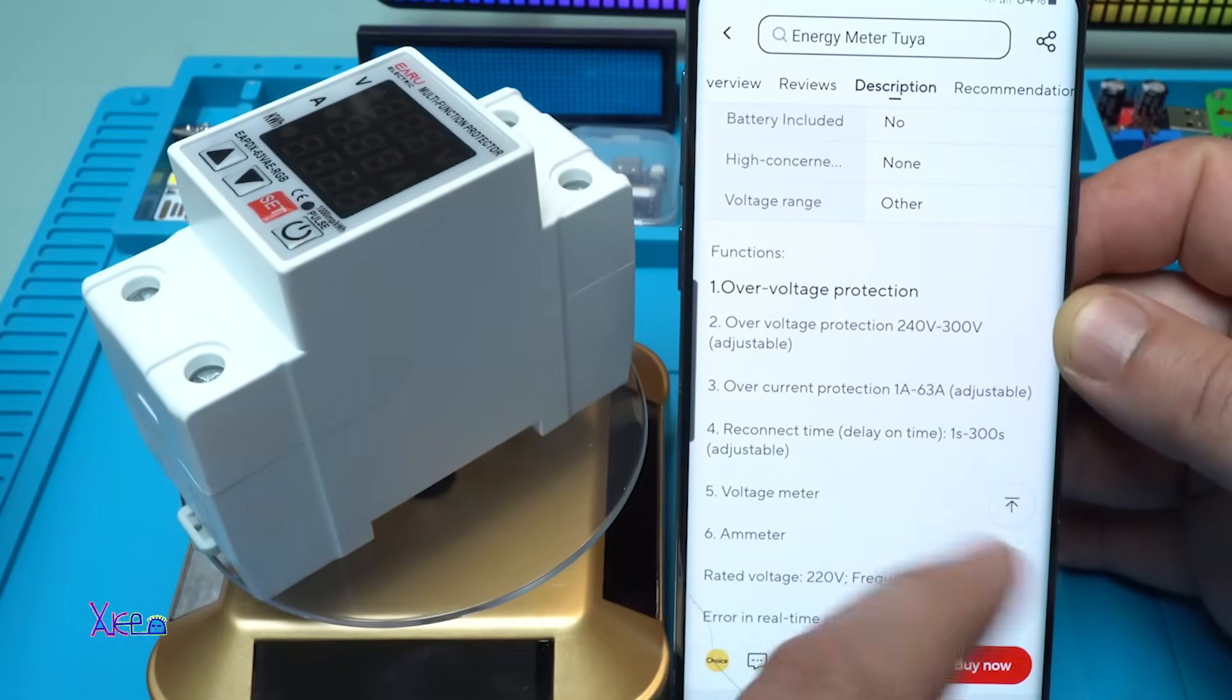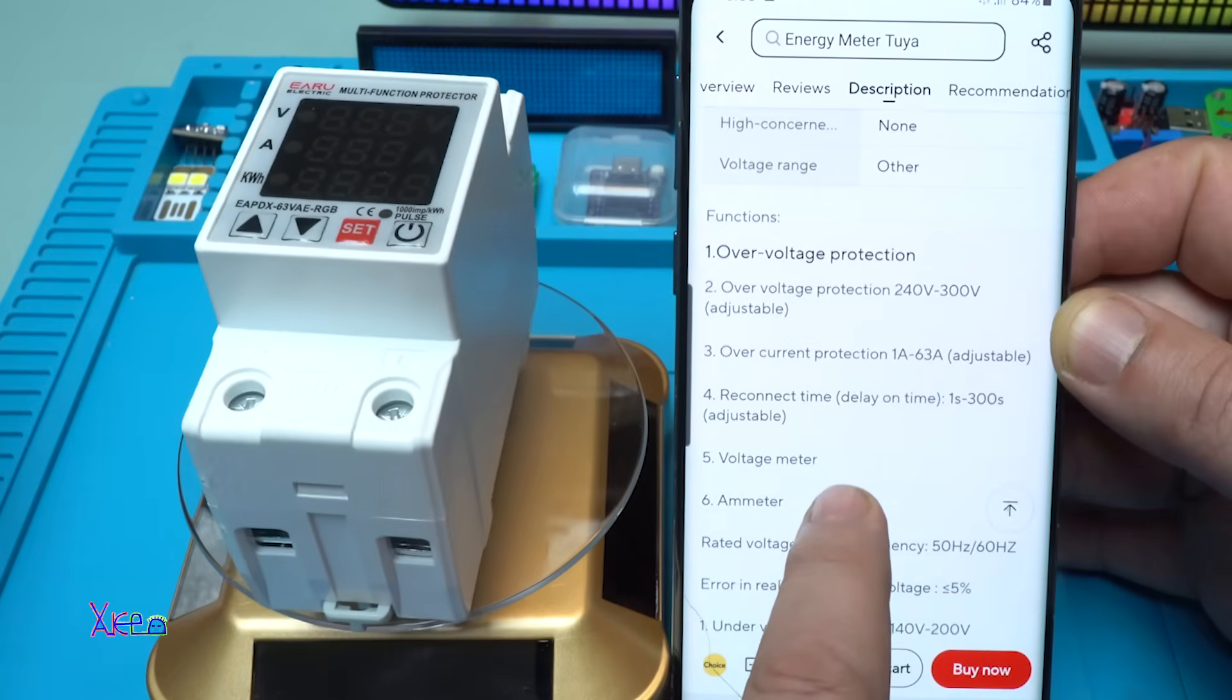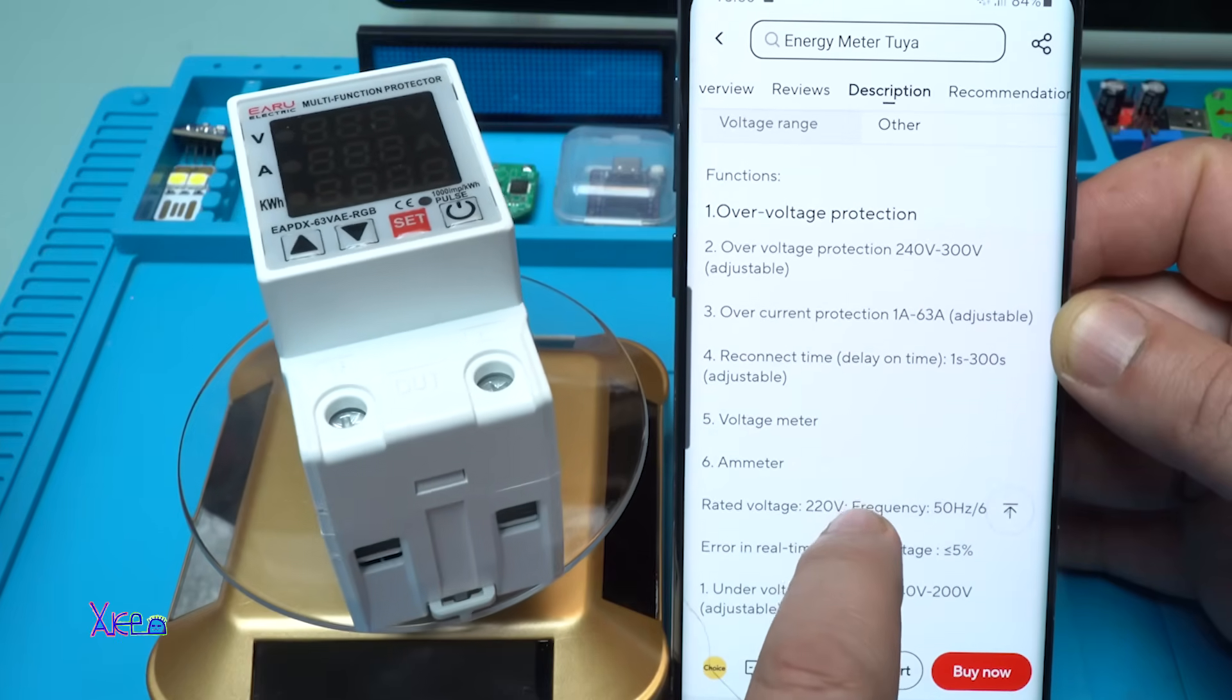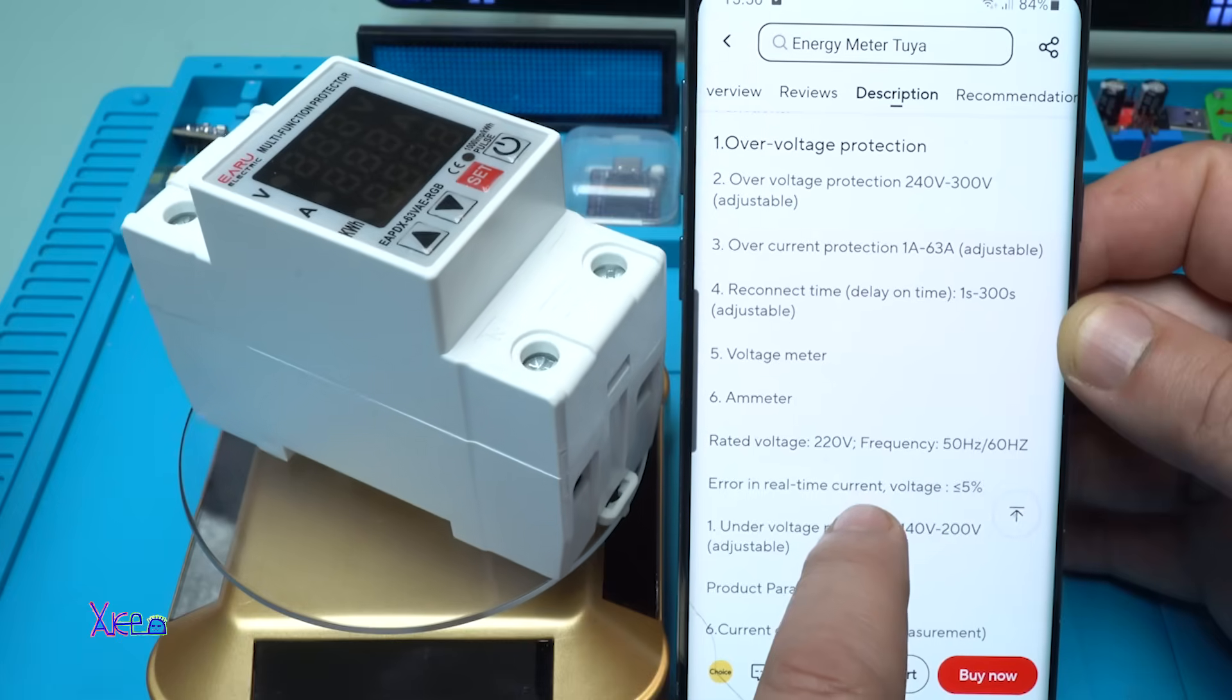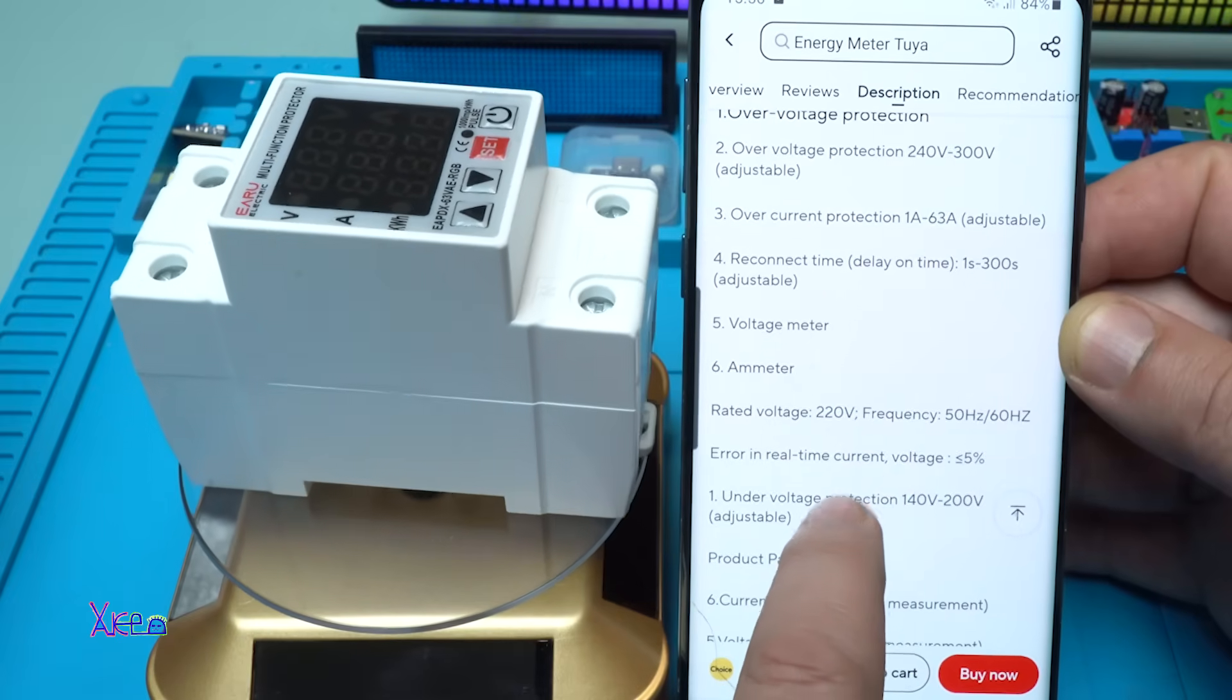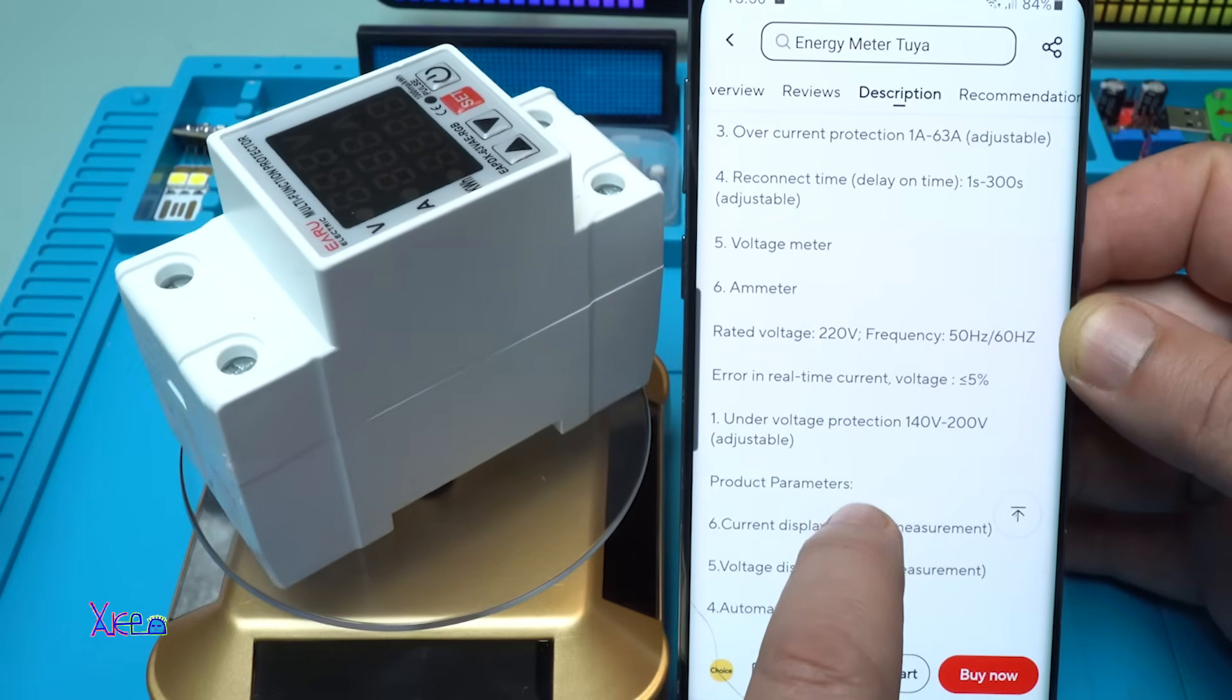Over voltage protection 240 to 300 volts, adjustable. Over current protection 1 to 63 amperes, delay on time, adjustable 1 second to 300 seconds, voltage meter, ammeter, rated voltage 220, frequency 50 or 60 hertz.